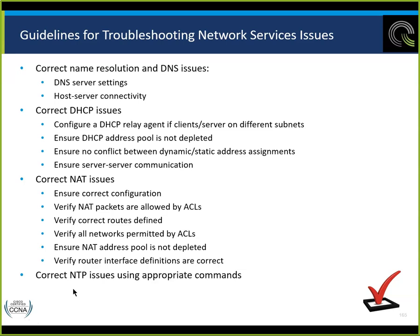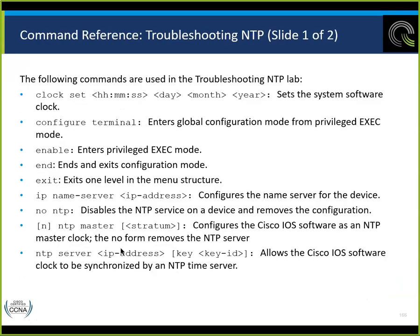Verify that router interface definitions are correct and that there are routes back to the public addresses in the NAT pool — so that when we go out with a public NATed address, traffic can come back. NTP issues: use the appropriate commands. NTP is a pretty simple protocol — check it occasionally to ensure times are being updated correctly. Correct timestamps on a syslog server make troubleshooting multiple devices much easier.